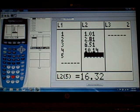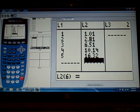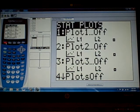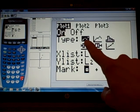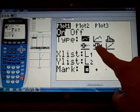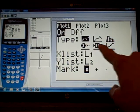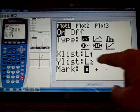At this point we need to turn our scatter plot on because if we were to press graph we would not be able to see anything. So we press second and Y equals and notice that all the plots are off. We press enter to pull up plot one and press enter on on. We need a scatter plot right now.